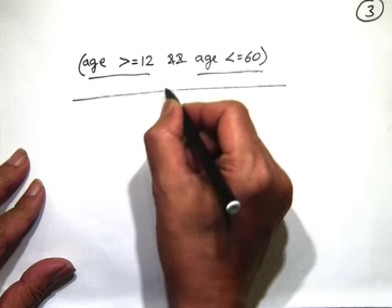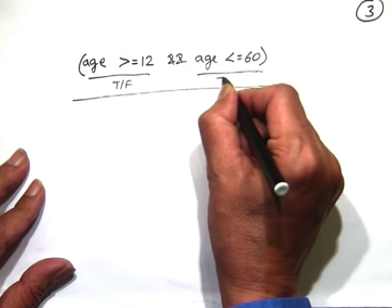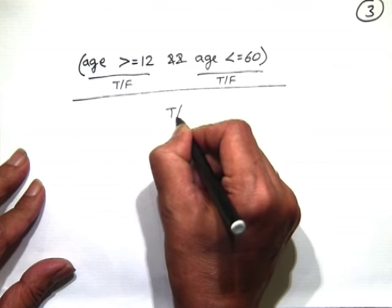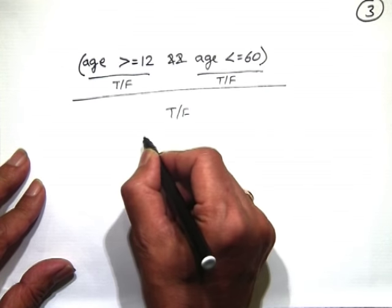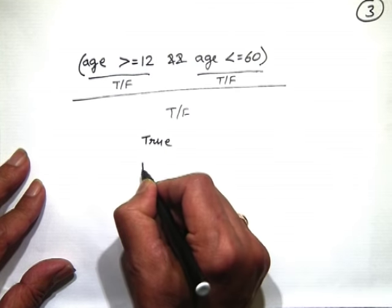These are binary logical operators. At one time they operate upon two operands on either side. If you have to combine three conditions, you can write: this && this && this. You can write a logical expression as complicated as a numerical expression — this && this || this && not of something. All of this will evaluate to true or false, which C++ represents as 1 for true and 0 for false.